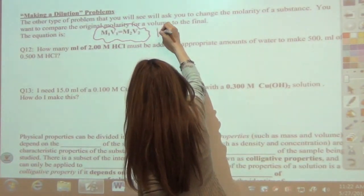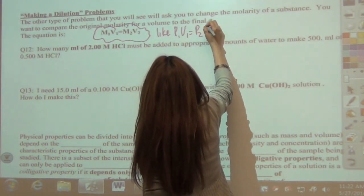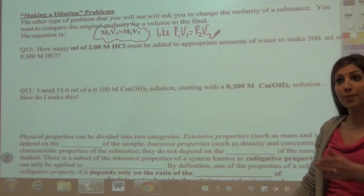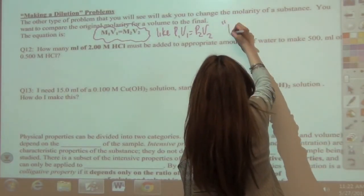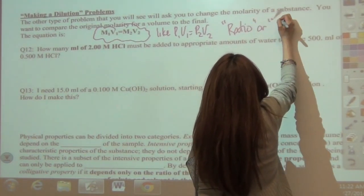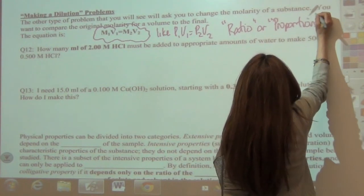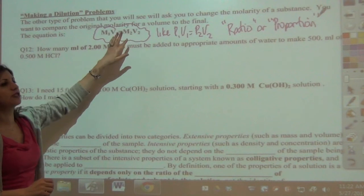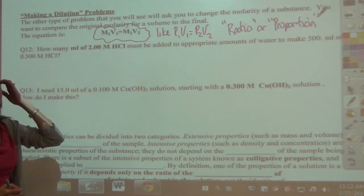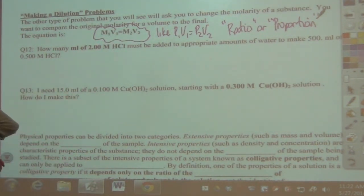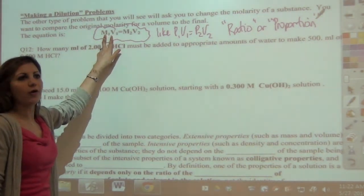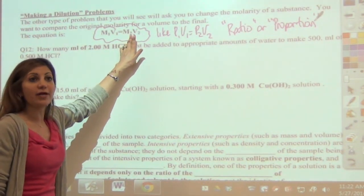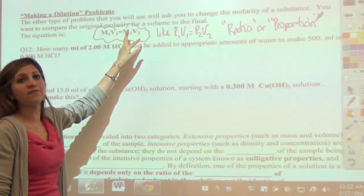It looks like M1V1 equals M2V2 — we call that a proportion or a ratio. The idea is that once you know one set, you can figure out the change and calculate the other using this proportion. All we're going to do is put in our molarity and volume, and they'll give us either a new molarity or new volume, and we solve for the remaining unknown.